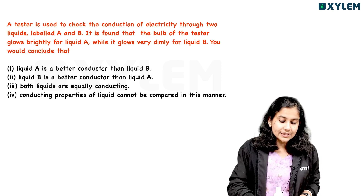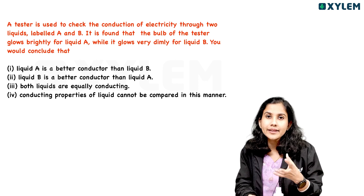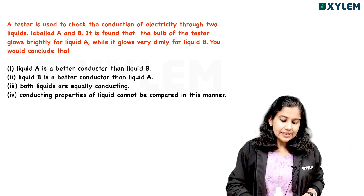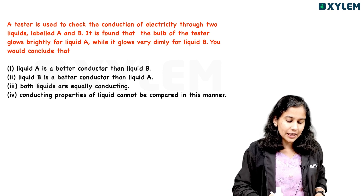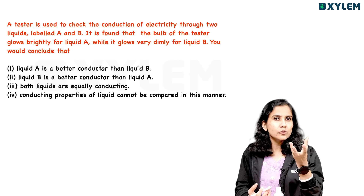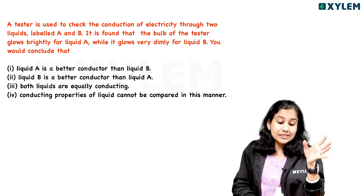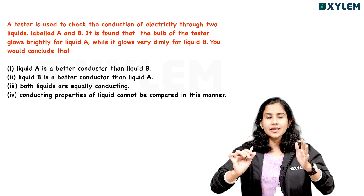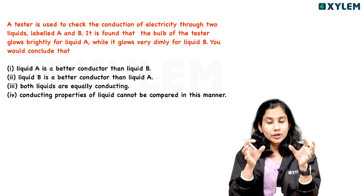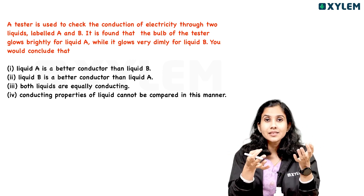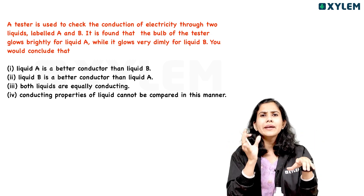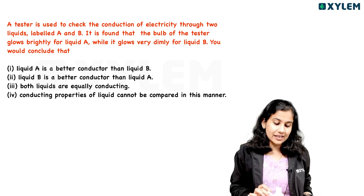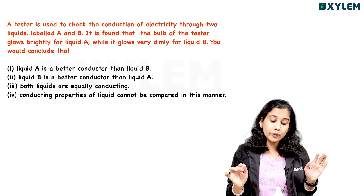A tester is used to check the conduction of electricity through two liquids, labeled A and B. It is found that the bulb of the tester glows brightly for liquid A, while it glows very dimly for liquid B. What would you conclude? The options are: liquid A is a better conductor than liquid B; liquid B is a better conductor than liquid A; both liquids are equally conducting; or the conducting properties of liquid cannot be compared in this manner.